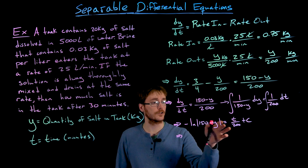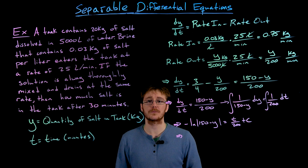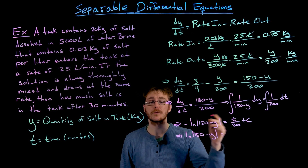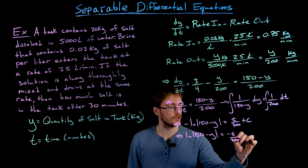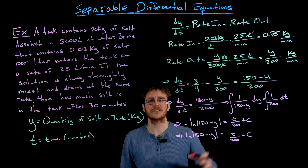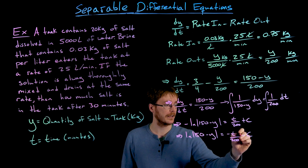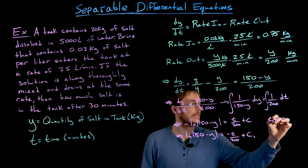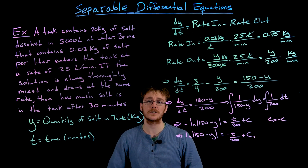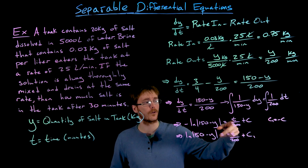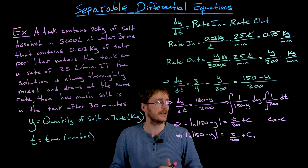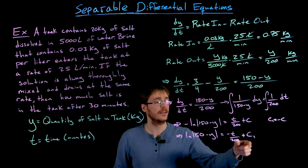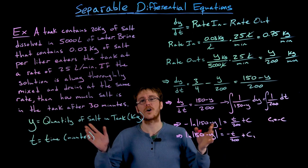Now we solve explicitly for y in terms of t. First, multiply both sides by negative 1 to get the natural log of |150 minus y| = negative t/200 minus c. Since c is an arbitrary constant, we relabel negative c as c₁, which is a common step when working with differential equations — constants get combined and relabeled as the algebra progresses.